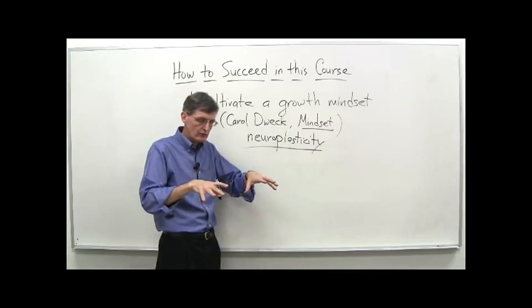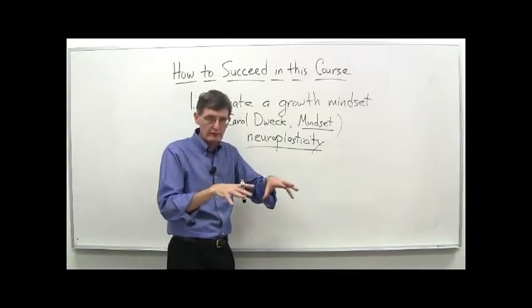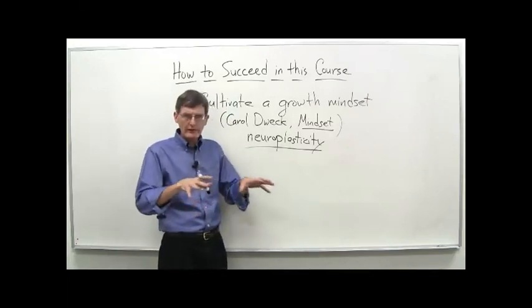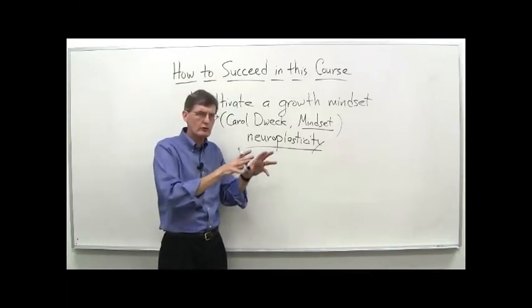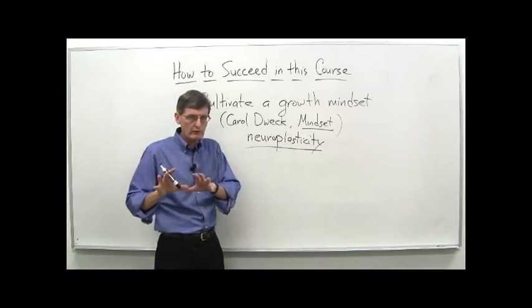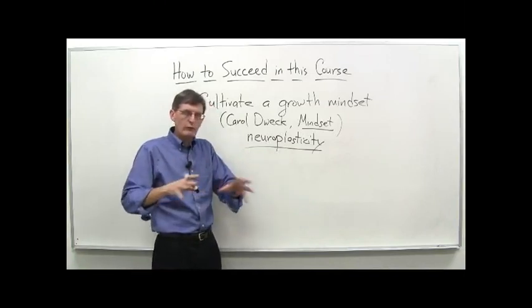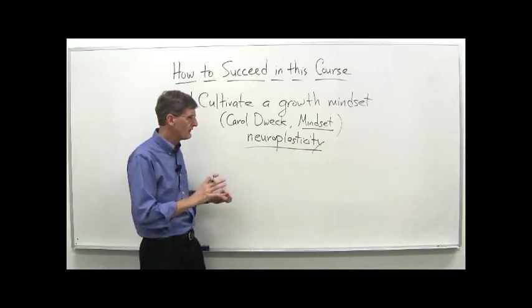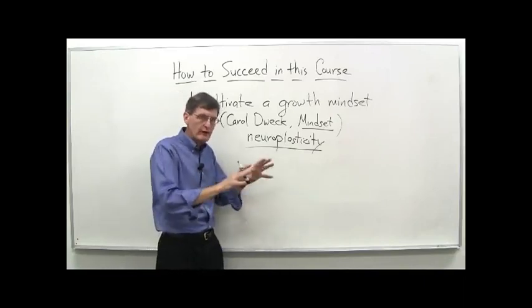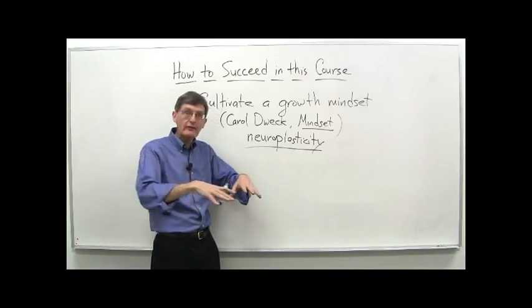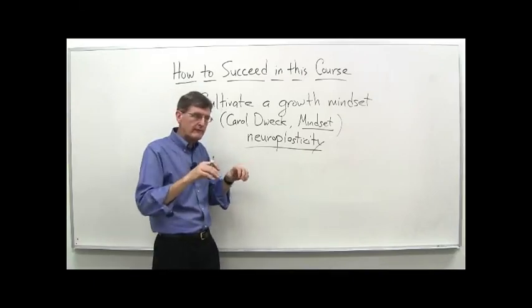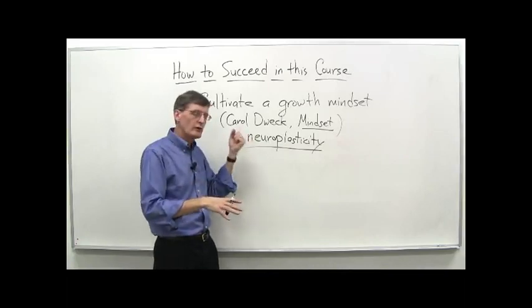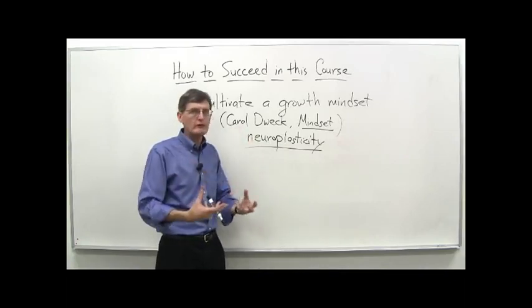They've actually studied students going into a freshman chemistry class, a very difficult class. And by asking them a few questions beforehand, they can more or less identify those who tend toward a more fixed mindset versus those who tend toward a growth mindset. Whether it's genetics, personality, upbringing, all those things can factor into it. And then they tracked them in the class. And they found that both groups struggled, many of them in both groups struggled.